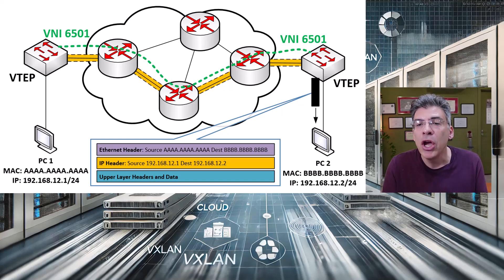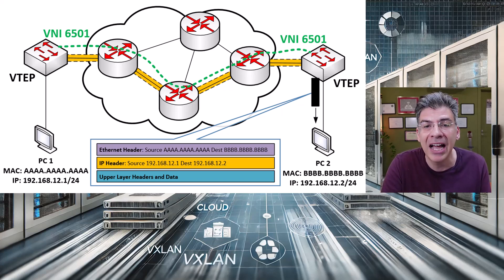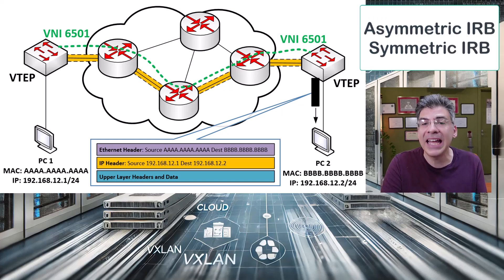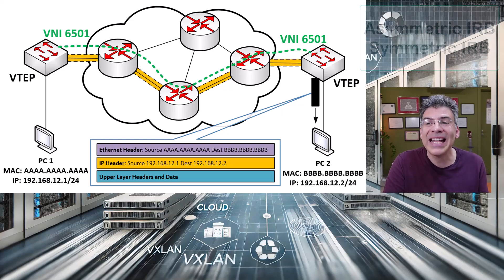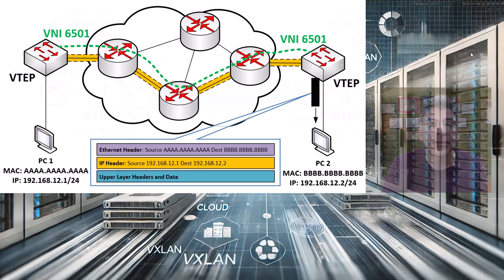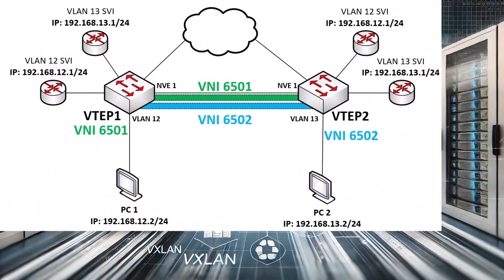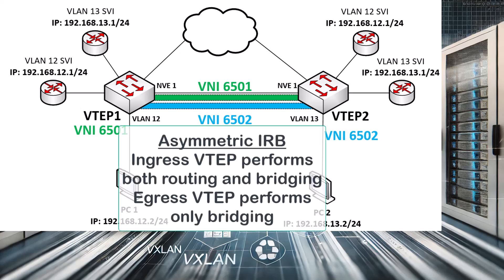Having clarified this terminology, we can now talk about two specific implementations of IRB: asymmetric and symmetric integrated routing and bridging. Asymmetric IRB is implemented when the ingress VTEP is configured to perform both bridging and routing, while the egress VTEP is configured to perform only bridging.